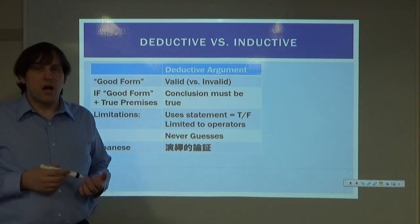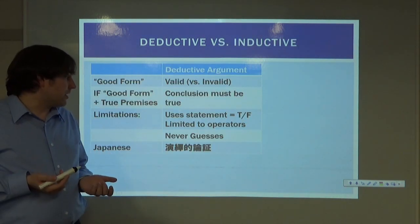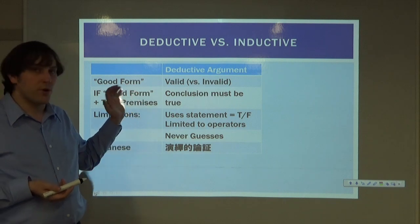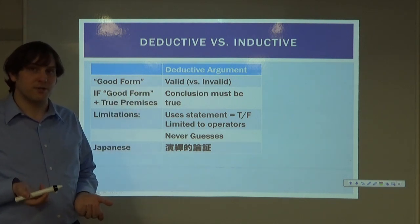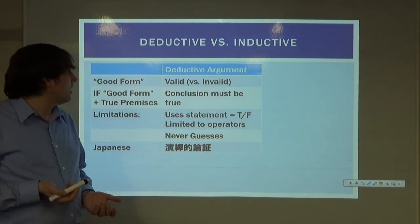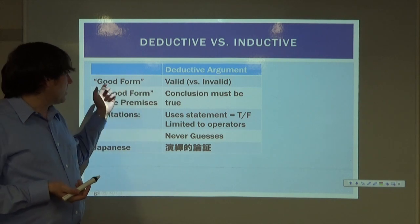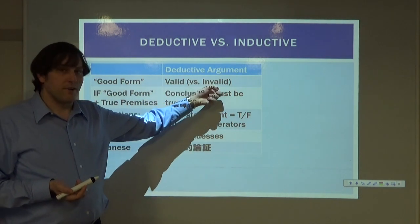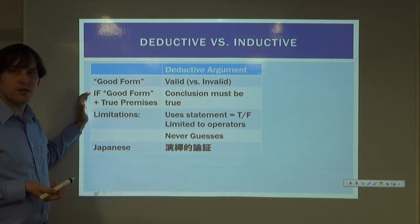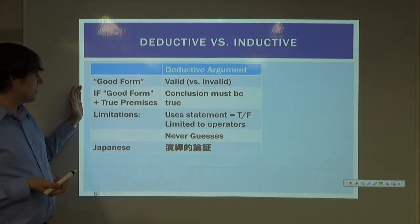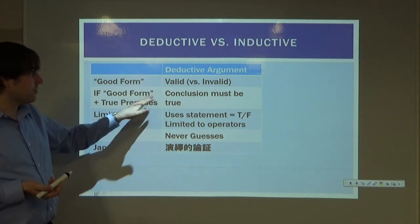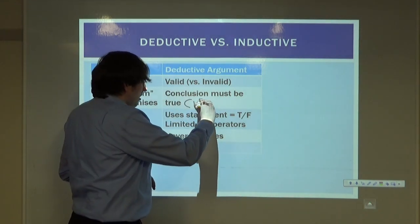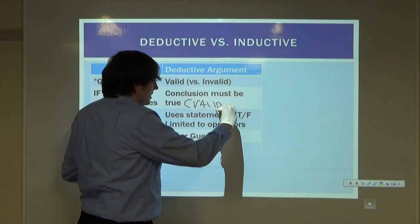Now I want to talk to you about a new form of arguments. Up until now we focused on general rules for arguments and on deductive forms. In a deductive argument, a good form is valid; a bad form is invalid. If it has a good form plus true premises, the conclusion must be true. And this is validity.